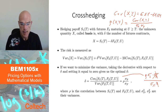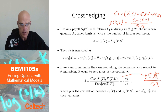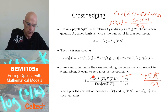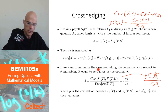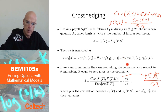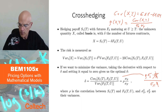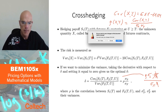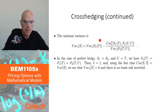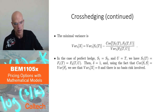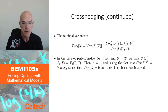Let's compute the optimal (minimal) variance. We substitute the formula for delta into the variance expression — putting this expression for delta in both places — and perform easy algebra. What we get is that the minimal variance equals the variance of S1 minus the covariance squared divided by the variance of F2.